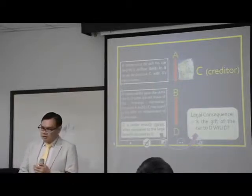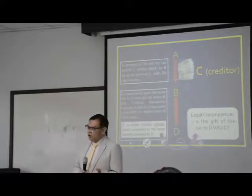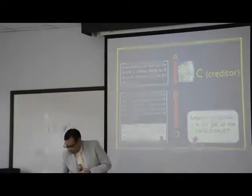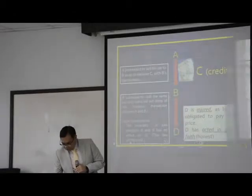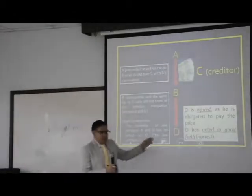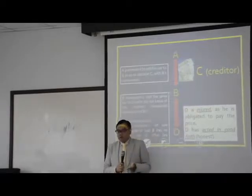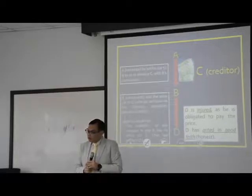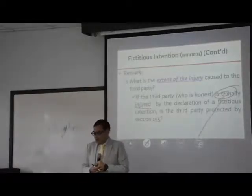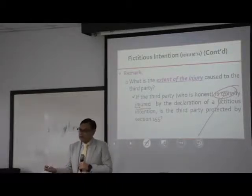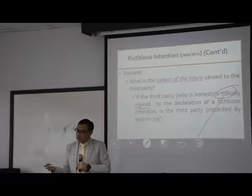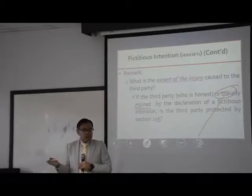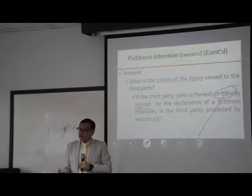Some say no, some say yes. The reason why the law protects D is because D is injured. Coming back to the two elements — injury and honesty — they must be injured. The law doesn't say how much injury. So it is a question of interpretation of law. Some academics believe that if D is very trivially injured — let's say he just spent 5,000 baht when he received a car worth 1 million baht — the injury is too slight, it's too trivial, then there is no reason to protect D. But others believe that the law doesn't say at all about the extent of the injury, so whatever extent of injury suffered by D, the law protects D nonetheless.